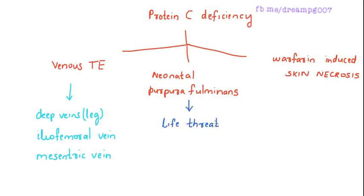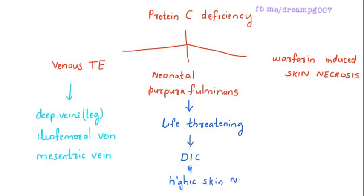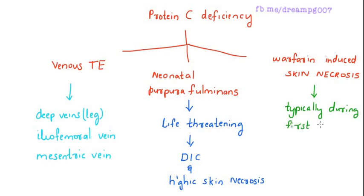Neonatal purpura fulminants is a life-threatening condition characterized by disseminated intravascular coagulation and hemorrhagic skin necrosis. Warfarin-induced skin necrosis is usually seen in the first several days of treatment with warfarin.